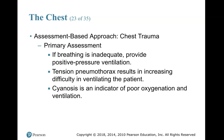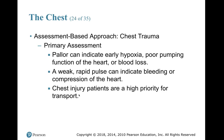If breathing is inadequate, provide positive pressure ventilation. Tension pneumothorax results in increasing difficulty ventilating the patient because it compresses and shifts everything in the thoracic cavity — air won't travel down the trachea as intended, and the collapsed lung won't fill with air. Cyanosis is an indicator of poor oxygenation and ventilation. Pallor can indicate early hypoxia, poor pumping function of the heart, or blood loss. Look for blotching of the skin. A weak, rapid pulse can indicate bleeding or compression of the heart.